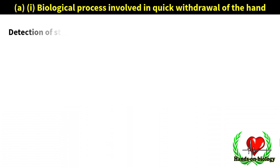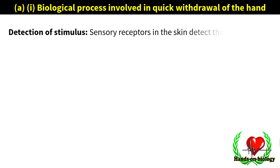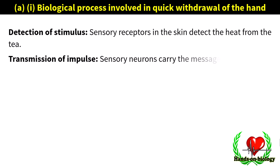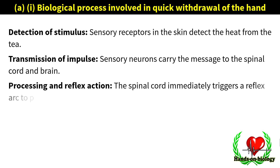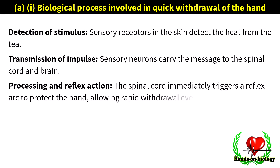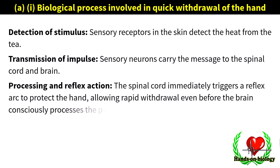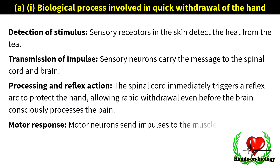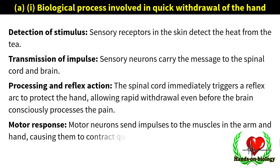The biological process involved in the quick withdrawal of the hand: detection of stimulus — sensory receptors in the skin detect the heat from the tea. Transmission of impulse — sensory neurons carry the message to the spinal cord and brain. The spinal cord immediately triggers a reflex arc to protect the hand, allowing rapid withdrawal even before the brain consciously processes the pain. Motor neurons send impulses to the muscles in the arm and hand, causing them to contract quickly and pull the hand away.